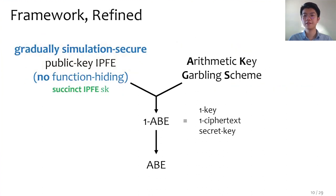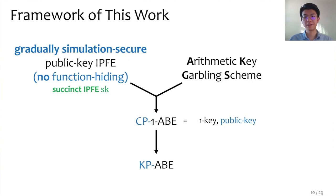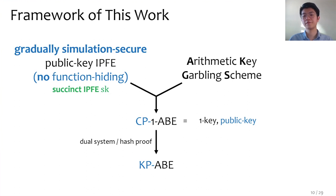To overcome this issue, we replace the function-hiding IPFE by a public key IPFE, which is not function-hiding. Instead, it satisfies a new security property we propose in this work called gradual simulation security. It is possible to have succinct keys in such a scheme, which eventually translates to succinct ABE. As a consequence, our 1ABE also changes: what we obtain from the new two ingredients is a ciphertext policy 1ABE which is a public key scheme. By using the well-known techniques of dual-system encryption or hash-proof systems, we simultaneously switch the roles of keys and ciphertext and upgrade 1ABE to full ABE, obtaining KP-ABE from CP-1ABE.